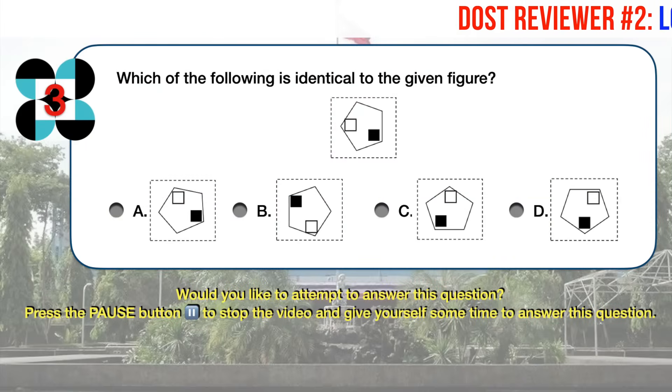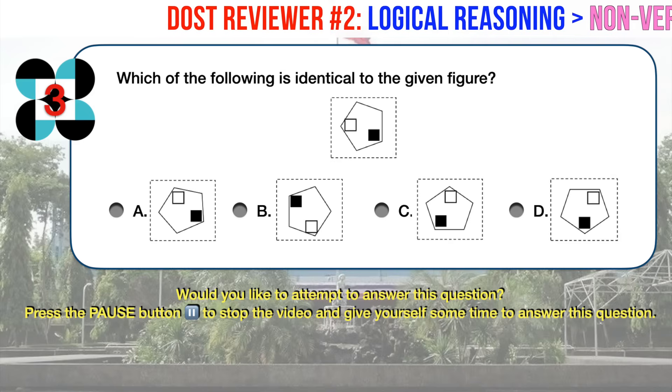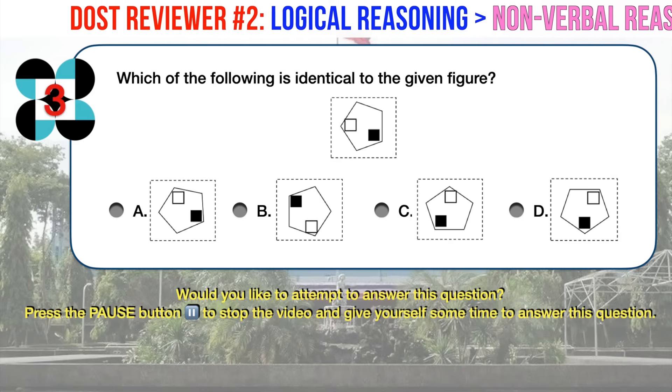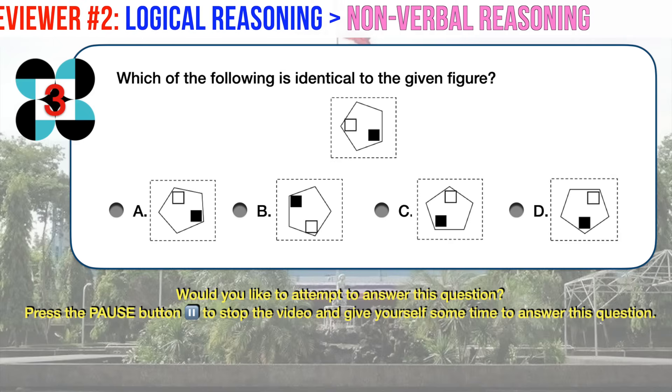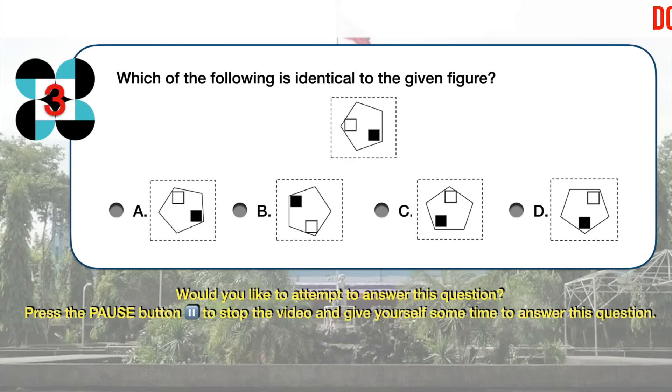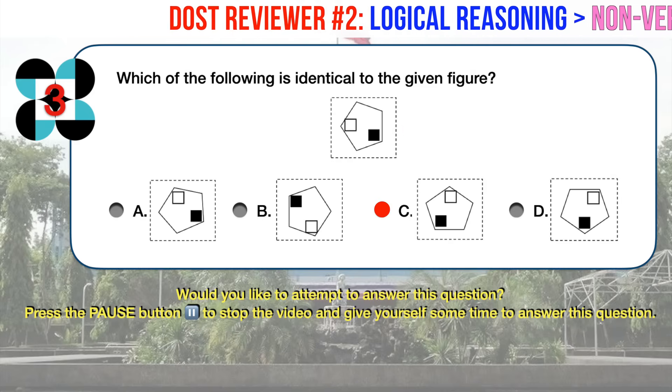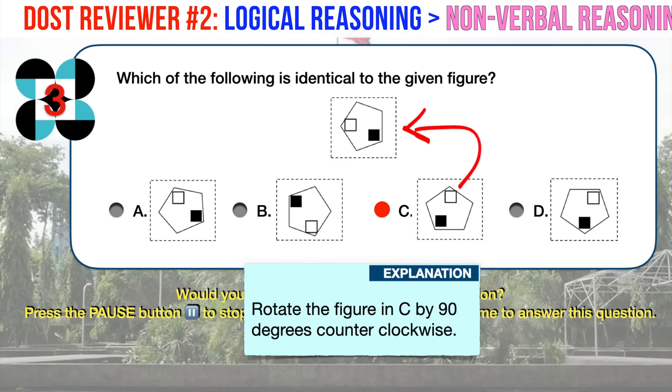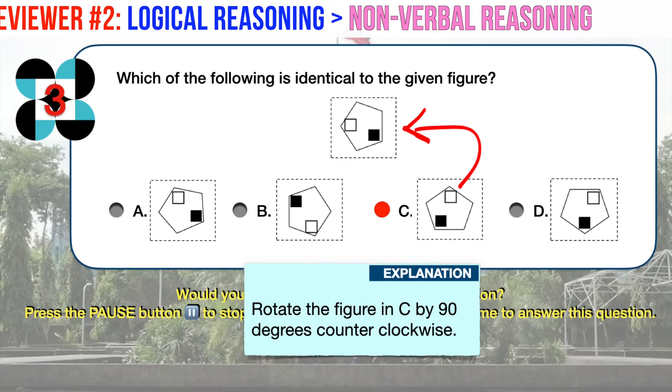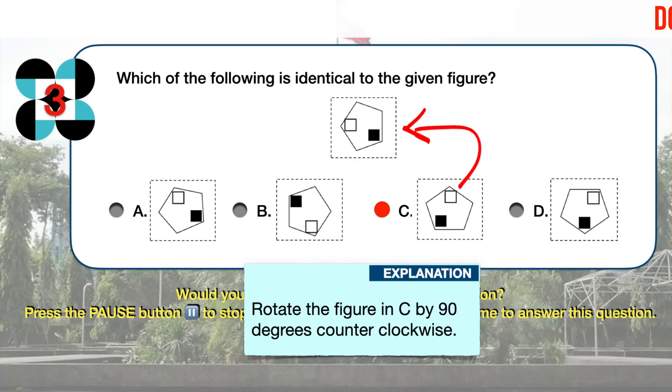Nonverbal reasoning number 3. Which of the following is identical to the given figure? The correct answer is C. Rotating the figure in answer choice C by 90 degrees counterclockwise will immediately make it identical to our given figure. None of the other answer choices is identical with the given figure no matter how we rotate them.